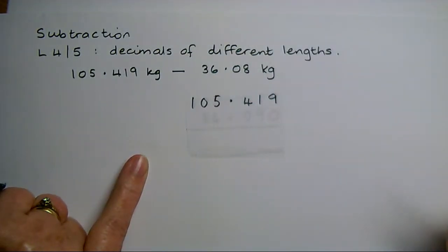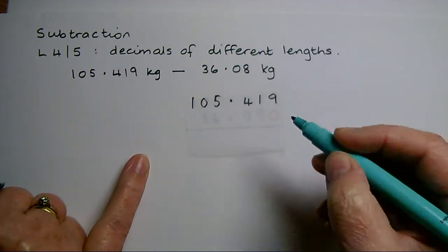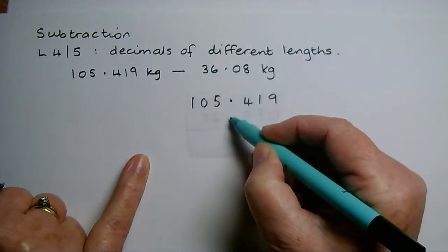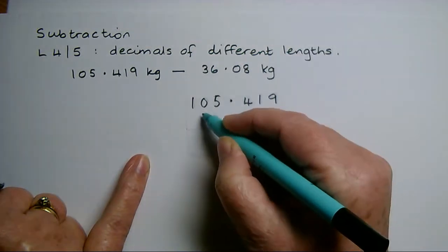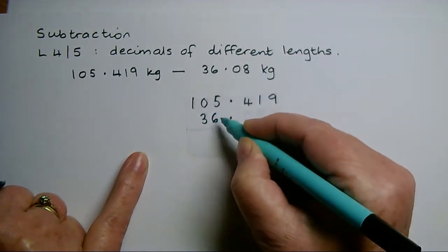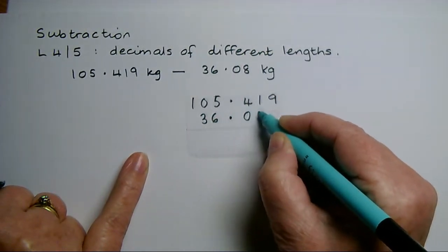So I've written the first one, 105.419. Underneath that, I'm going to write the second one, lining up the decimal place and writing in 36.08.